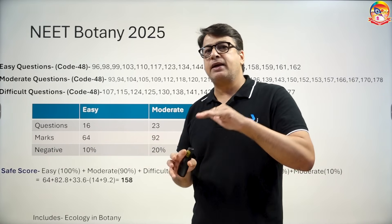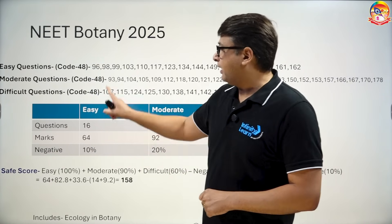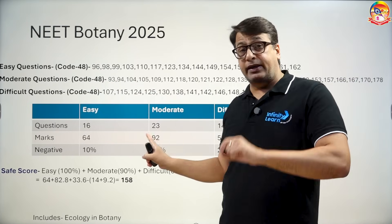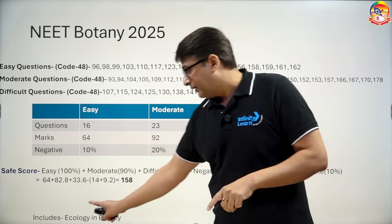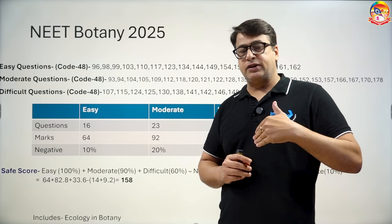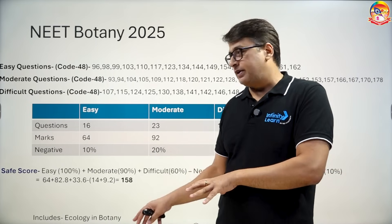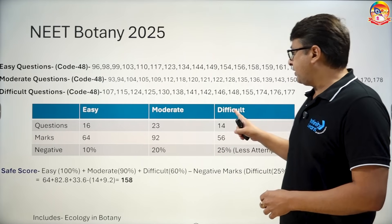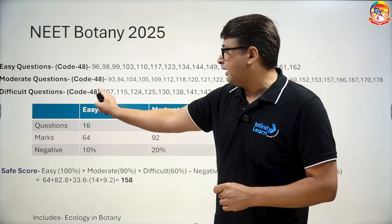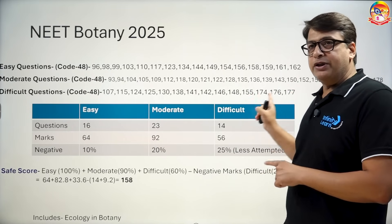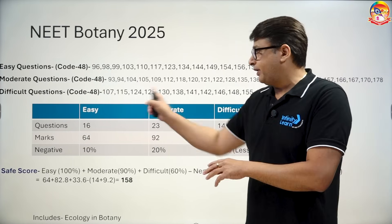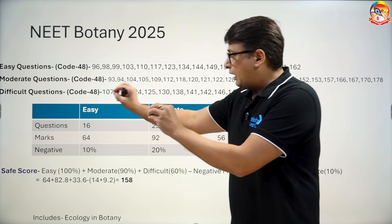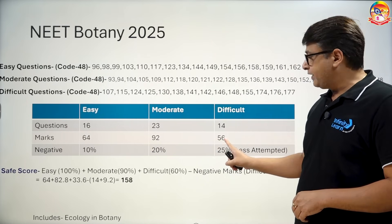So 64 marks are in the easy category. The moderate questions in code 48 are 93 to 178 — that is 23 questions, because ecology has been added to botany, making the number of questions higher than 45. You can adjust according to the subject you were taught in class 11th and 12th. For difficulty, the difficult questions are 107 to 117. You can take a screenshot of this. If you count the difficult questions, it is 14, worth 56 marks.